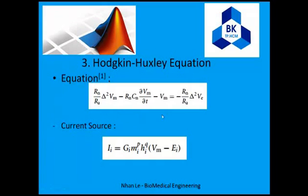G-bar represents the maximum value of the conductance of the membrane. Each ion will have a typical G-i value. The simulation involves a very complicated equation, but I will present a simplified version of the equation here.